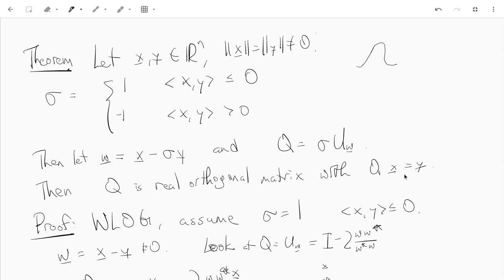Q also has some other properties like any vector that's orthogonal to both x and y. If you have a vector u orthogonal to both x and y, then Qu would be equal to u. That's just an aside.